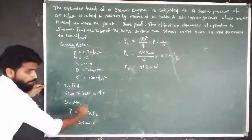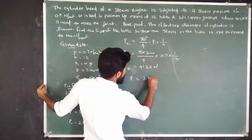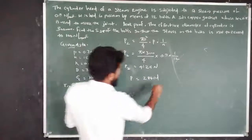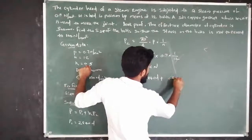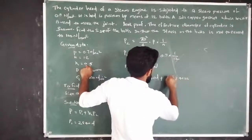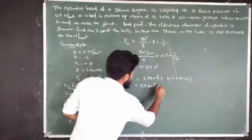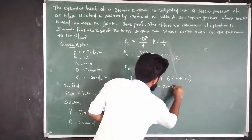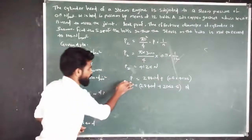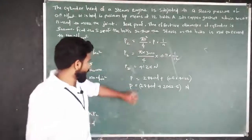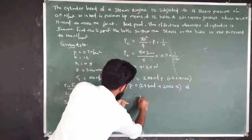Using the combined load equation: P = P1 + K × P2 = 2840D + 0.5 × 4100.25 = 2840D + 2062.5 Newtons. This is the total axial load.